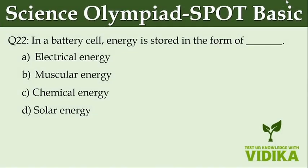In a battery cell, energy is stored in the form of dash. Option A, electrical energy. Option B, muscular energy. Option C, chemical energy. Option D, solar energy.